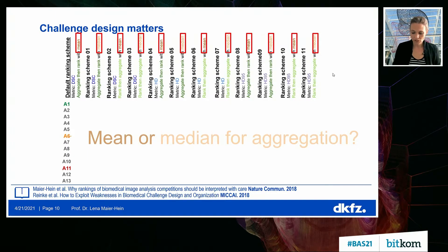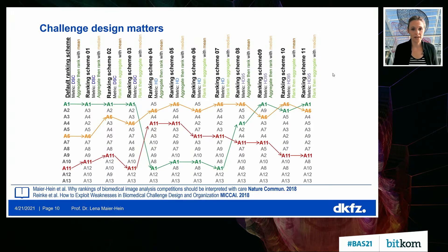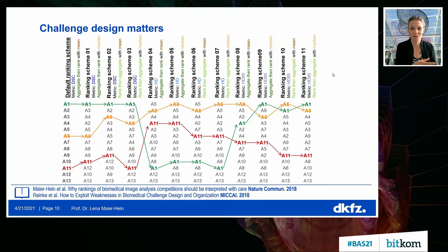The effect of these choices can be extremely large, depending on the size of your test data set. We showed that leaving out a single test case can change the ranking, and having another expert annotate the challenge data can change the ranking. So the ranking is very unstable.